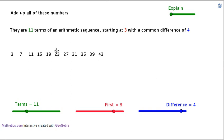Here we have a sequence of terms in an arithmetic sequence. It starts at 3 with a common difference of 4, so each term goes up by 4. We're going to add them all up, add up all those numbers.